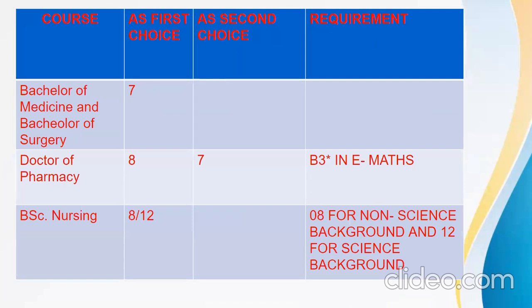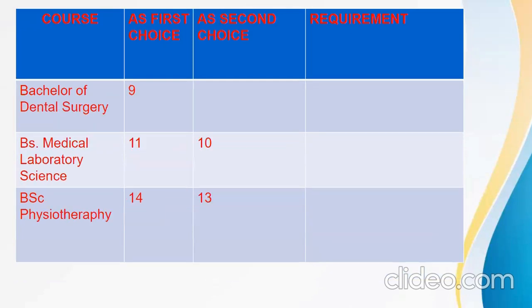Now let's go to the College of Health Sciences. Bachelor of Medicine and Bachelor of Surgery is aggregate 7 as your first choice, and you already know the other requirements — an entrance exam and an interview. Doctor of Pharmacy is 8 as your first choice and 7 as your second choice. BSc Nursing is 8 as your first choice for non-science background, and 12 for science background. Bachelor of Dental Surgery is 9 as your first choice. BSc Medical and Laboratory Science is 11 as your first choice and 10 as your second choice. BSc Physiotherapy is 14 as your first choice and 13 as your second choice.